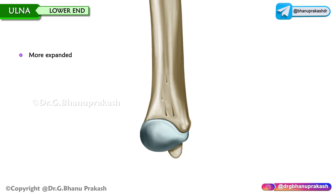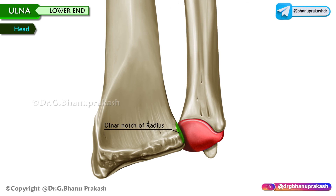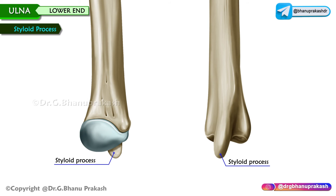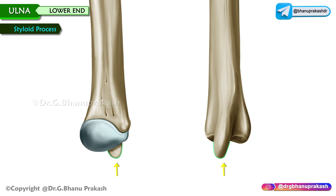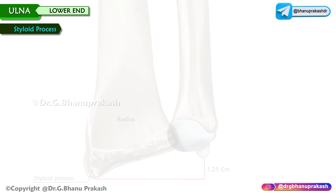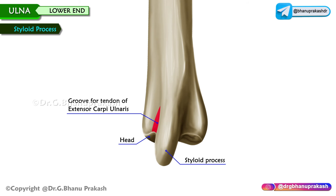The lower end is slightly more expanded and consists of the head. The lateral part has a smooth convex articular surface for the ulnar notch of the radius. Inferiorly, it has an articular disc attached to it, and the margins give attachment to the capsule of the wrist joint. The styloid process is a short, rounded process projecting downwards from the posterior medial aspect of the lower end; its tip is subcutaneous and lies 1.25 cm above the tip of the styloid process of the radius. A groove between the head and the styloid process lodges the tendon of extensor carpi ulnaris.